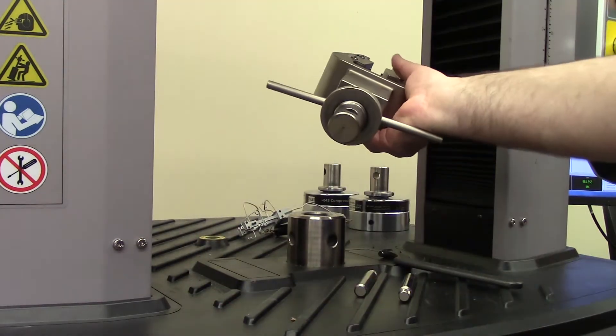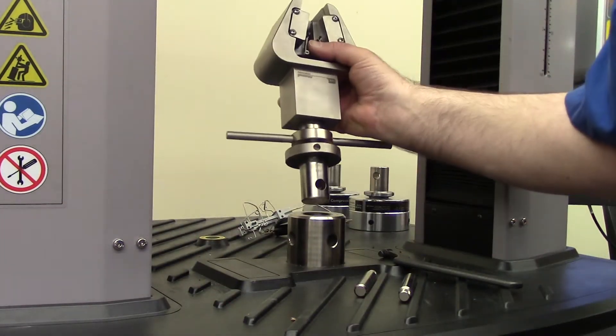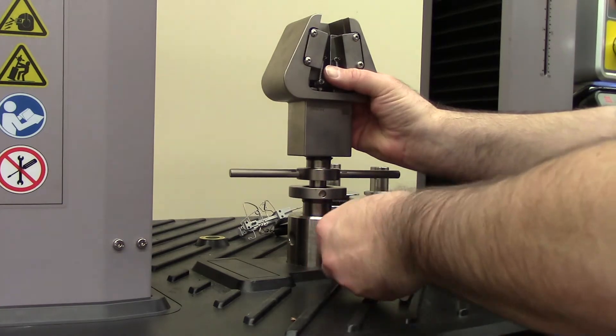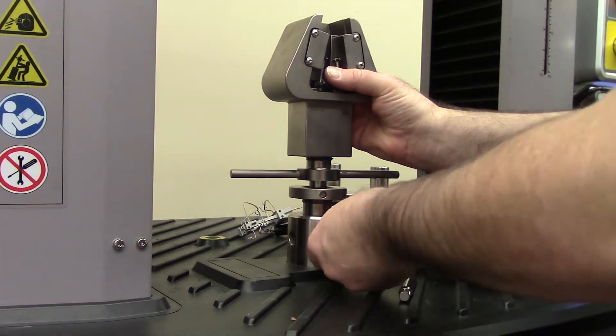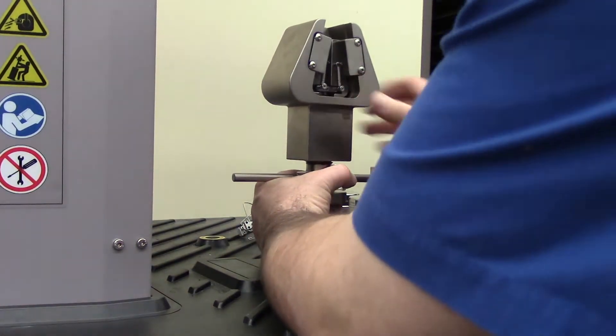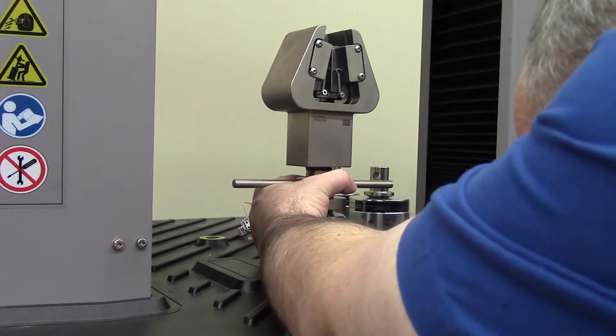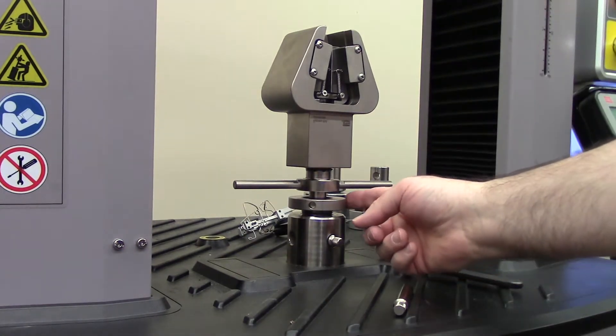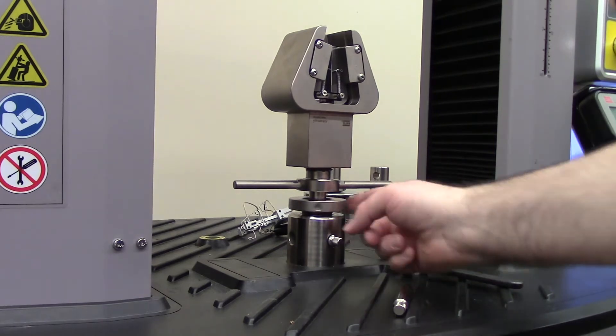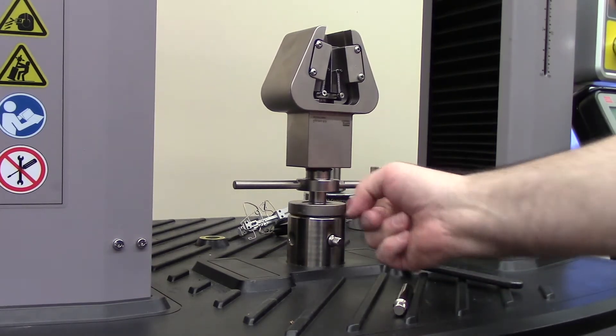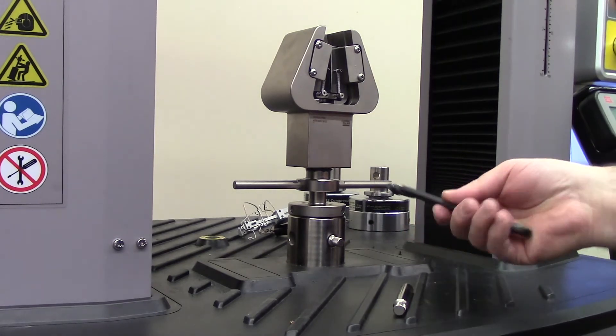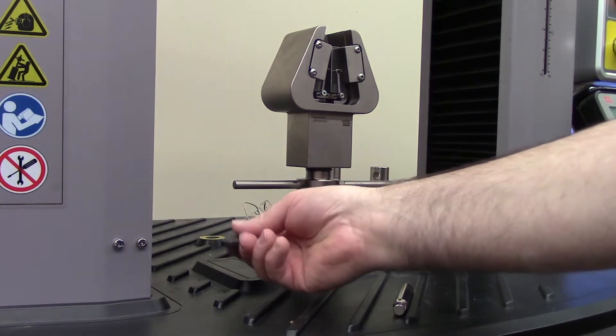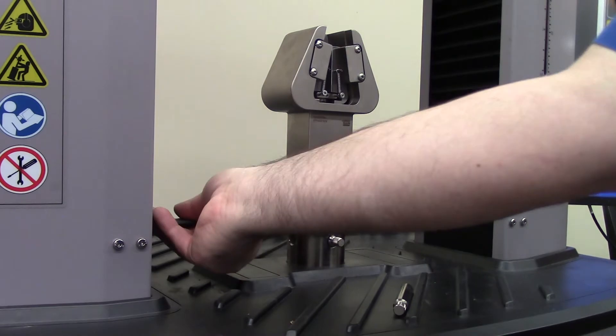Similar to the compression platen, this goes in and the pin goes through it. Then this has to get tightened up. It should be flush, and if it gets stuck or you want to put a little bit more on it, you can use the spanner and tighten that up.